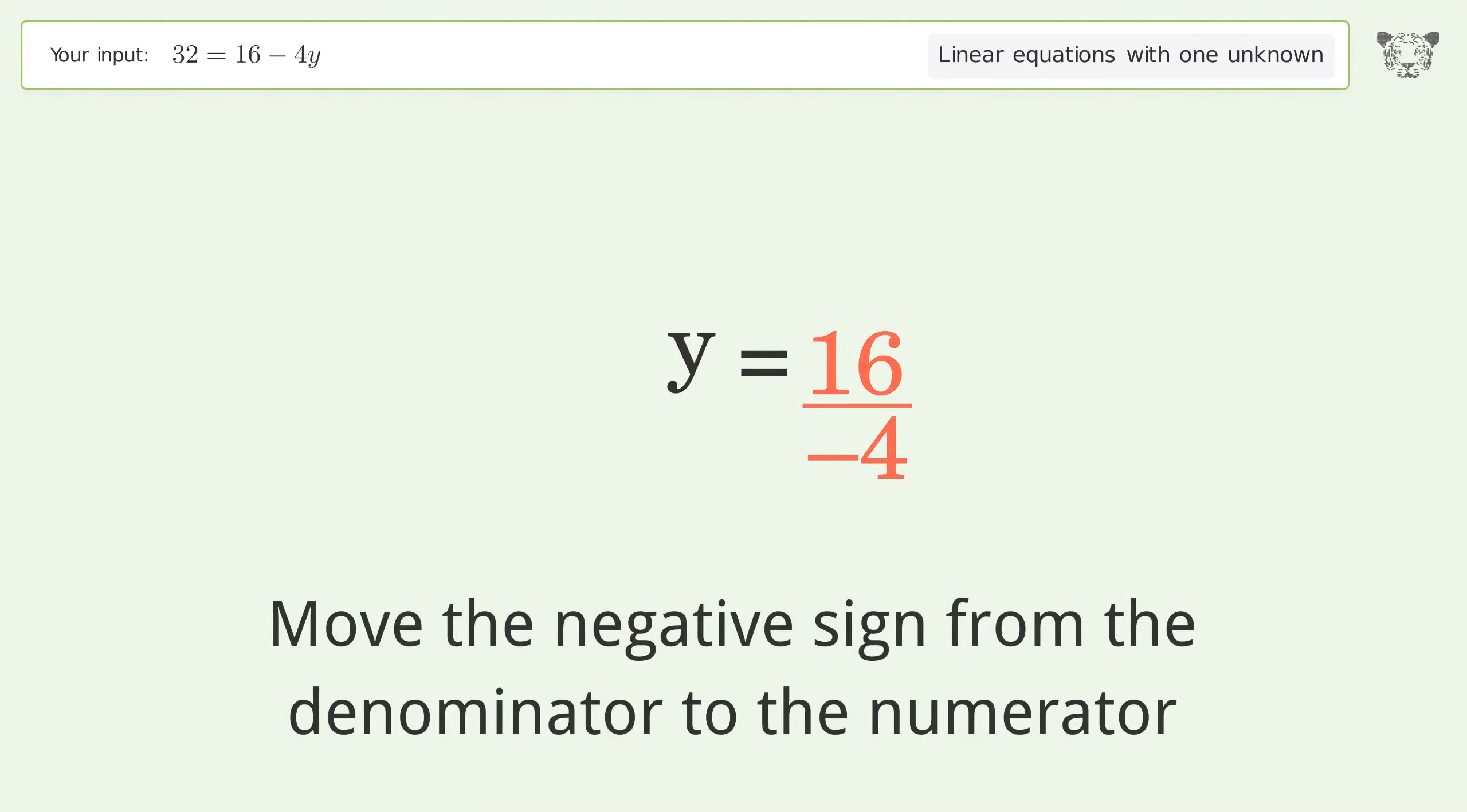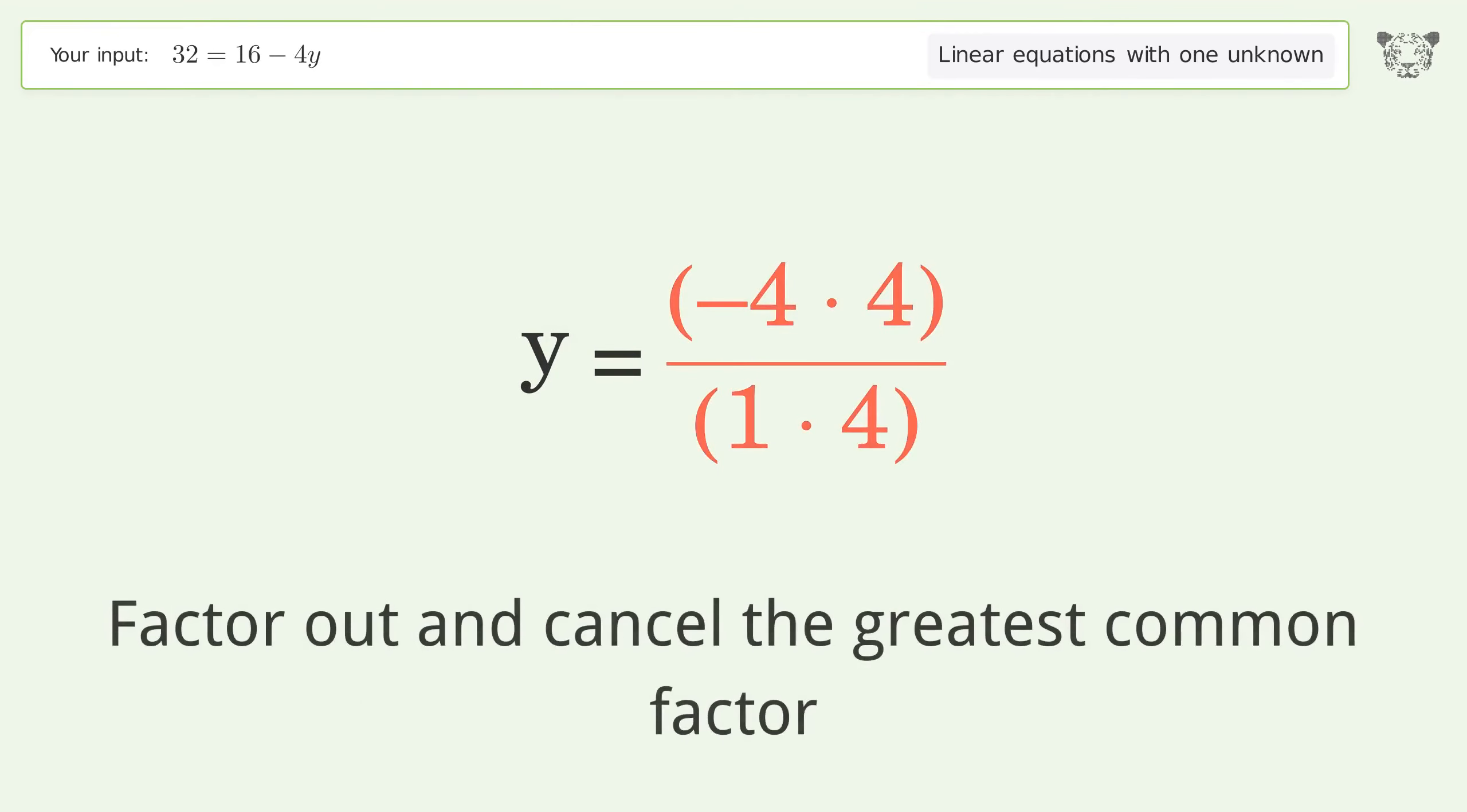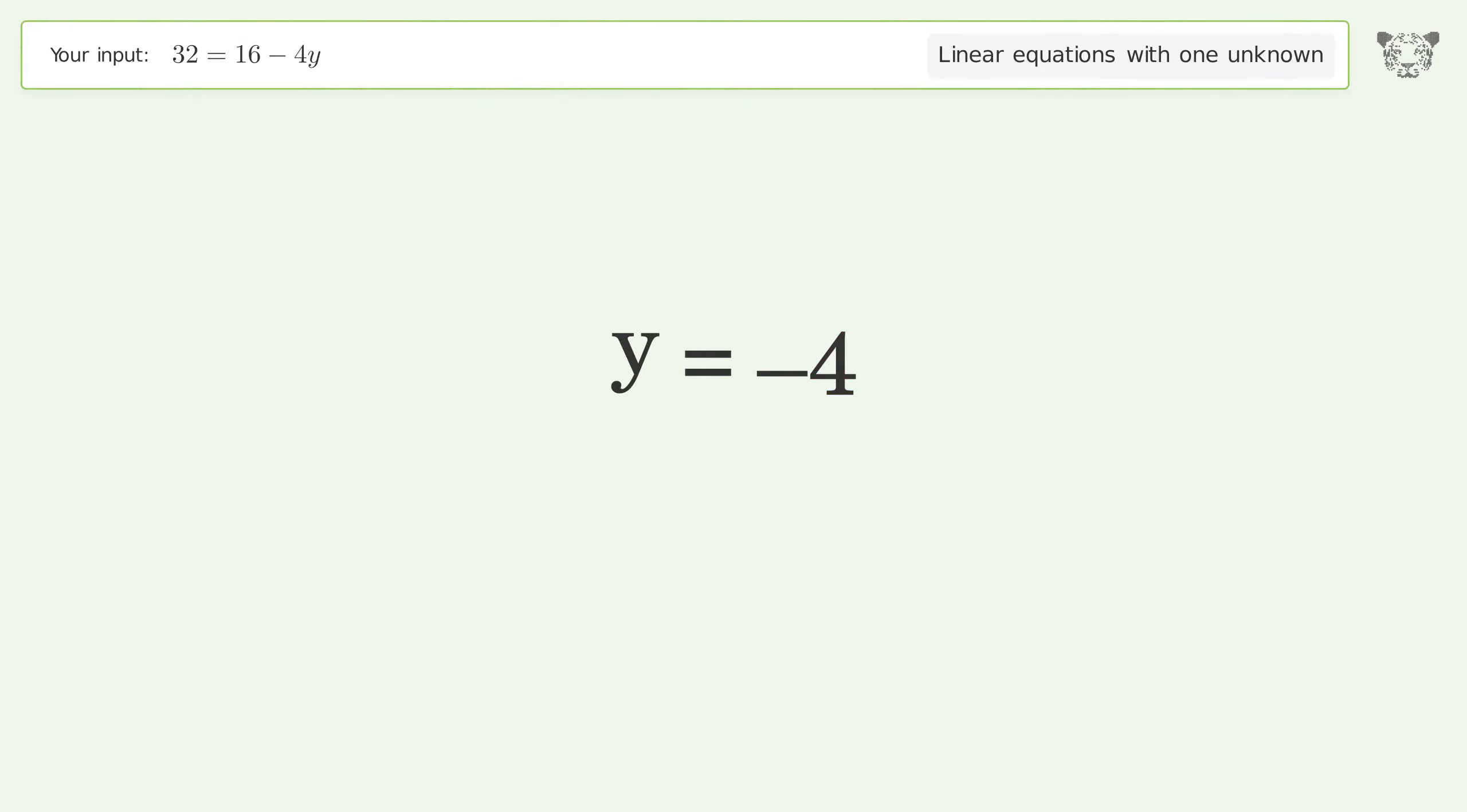Move the negative sign from the denominator to the numerator. Find the greatest common factor of the numerator and denominator. Factor out and cancel the greatest common factor. And so the final result is y equals negative 4.